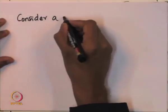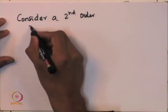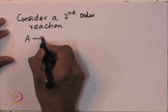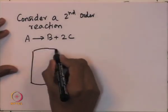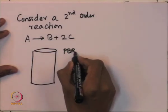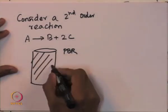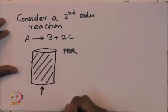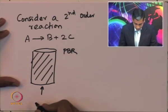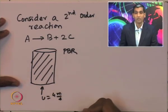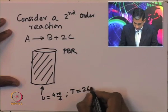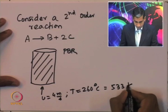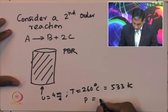Consider a second order reaction A going to B plus 2C. This is a tubular packed bed reactor filled with catalyst, and the gas fluid feed stream is flowing at a superficial velocity of 4 meters per second. The feed temperature is 260°C, which is equal to 533 Kelvin, and the pressure at which the fluid is flowing into the stream is 4.94 atmospheres.